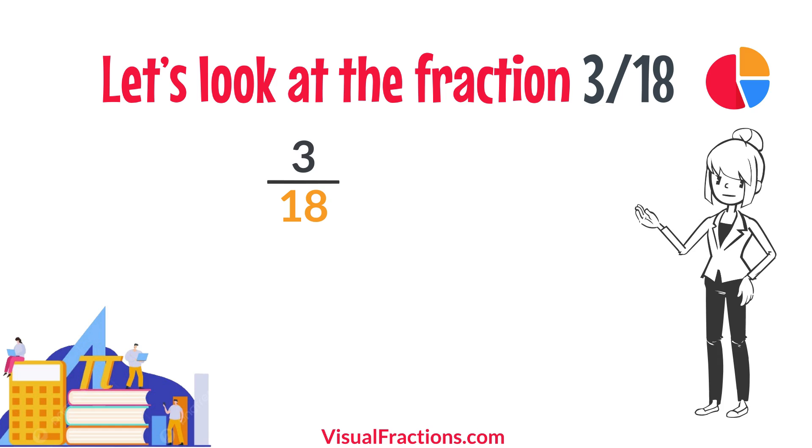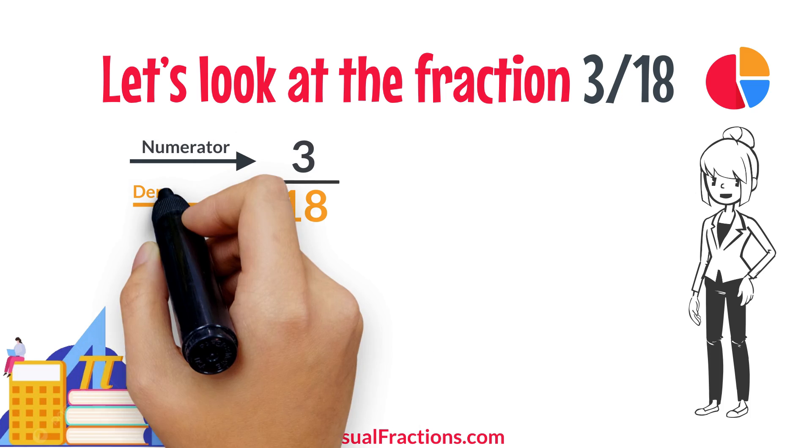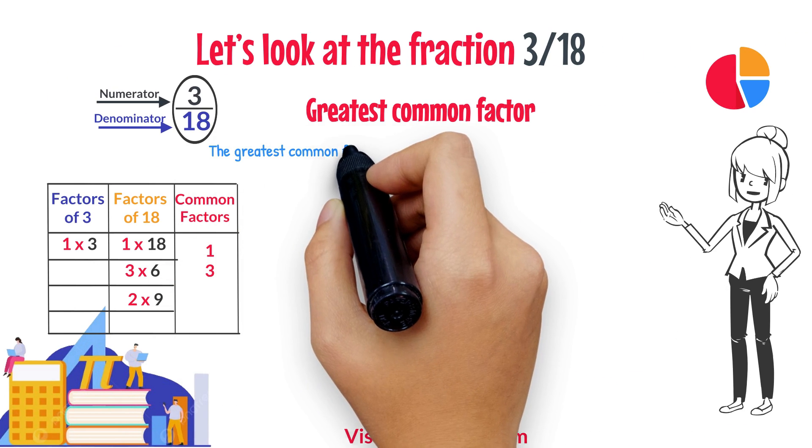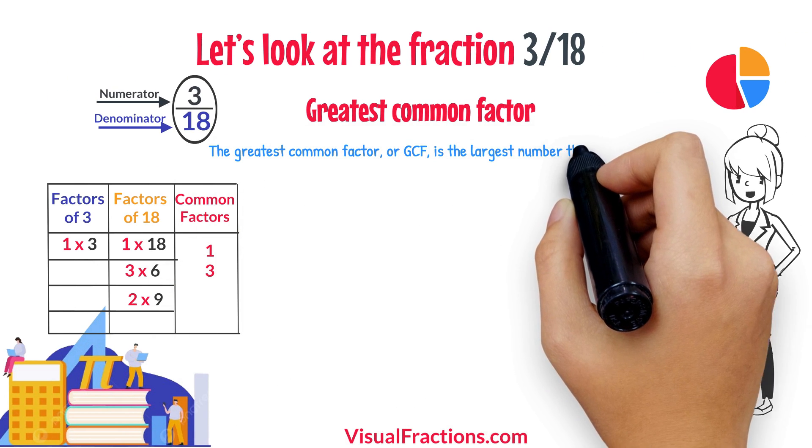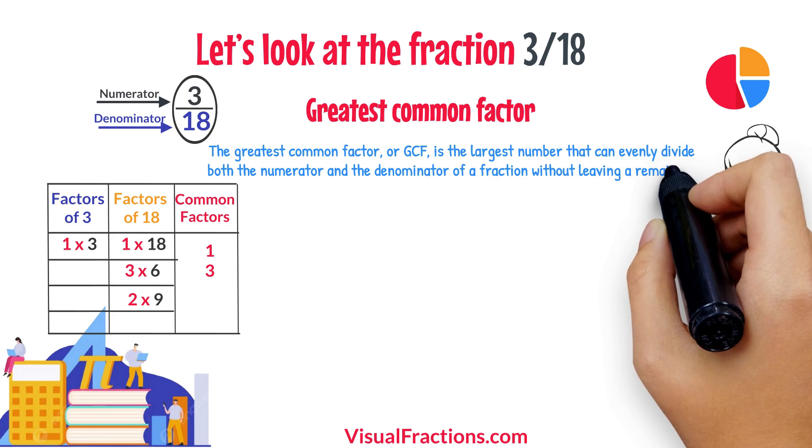Let's look at the fraction 3/18ths. To simplify it, we'll divide both the numerator and the denominator by their greatest common factor. The greatest common factor, or GCF, is the largest number that can evenly divide both the numerator and the denominator of a fraction without leaving a remainder.